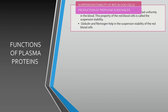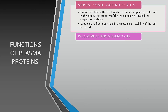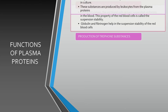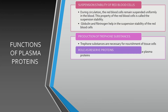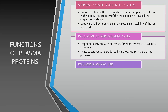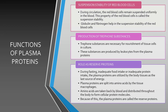Plasma proteins help in the production of trephone substances. These substances are produced by leukocytes from the plasma proteins, and are necessary for the nourishment of tissue cells in culture. Plasma proteins also act as reserve proteins. During fasting, inadequate food intake, or inadequate protein intake, the plasma proteins are utilized by the body tissues as the last source of energy.